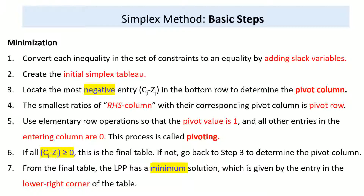There is no difference in steps 1 and 2. The third step is to locate the most negative entry of Cj minus Zj in the bottom row to determine the pivot column. In the case of Maximization, we locate the most positive entry, but for Minimization, we locate the most negative. This is one of the main differences.